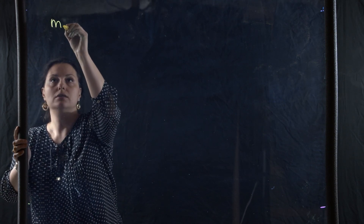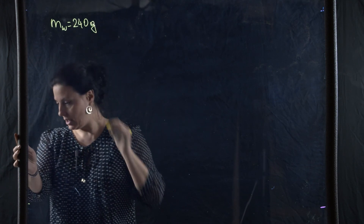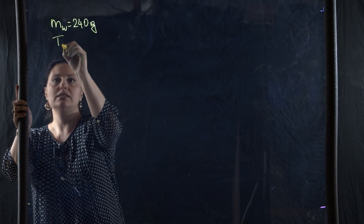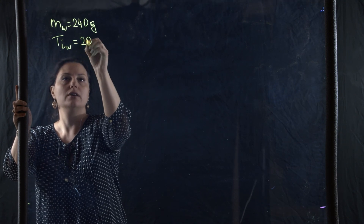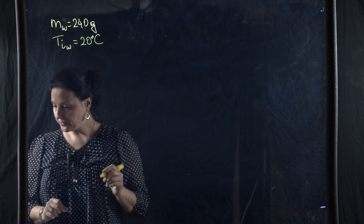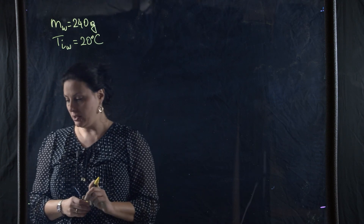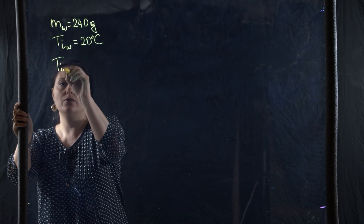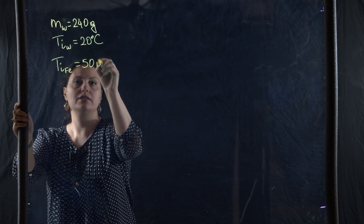We are now ready to do the last slide problems — there are four problems for that one. Let's start with the first one: 240 grams of water, initially at 20 degrees Celsius, is mixed with an unknown mass of iron which is initially at 500 degrees Celsius.